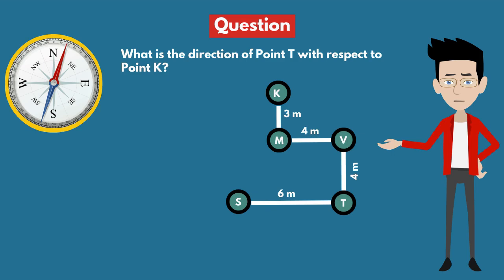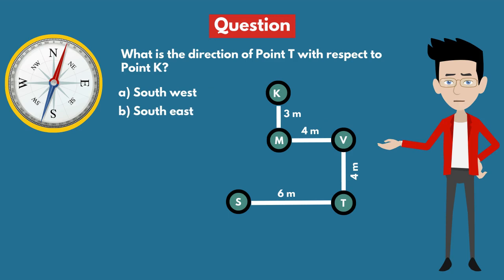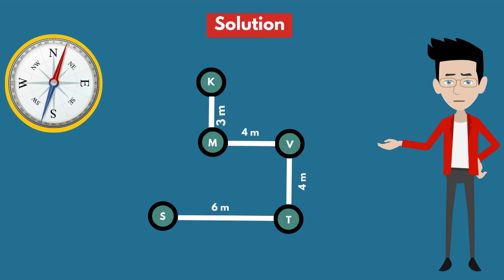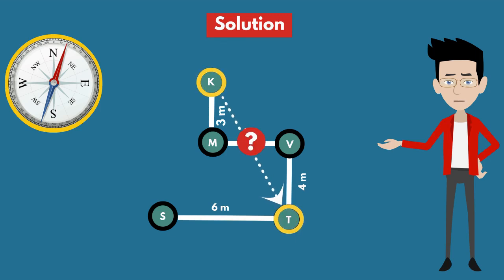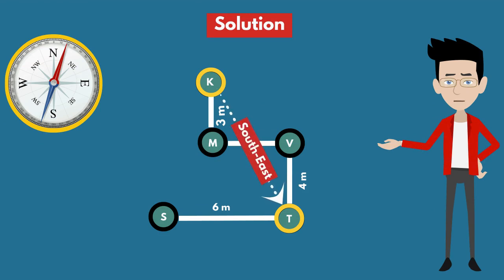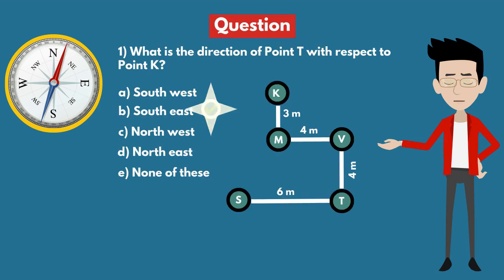First question: What is the direction of point T with respect to point K? The options are A. South-West, B. South-East, C. North-West, D. North-East, and E. None of these. In the diagram, we can clearly observe that point T is in the direction of south and east with respect to K. That means the direction of point T is South-East with respect to point K. So, the answer is option B, South-East.